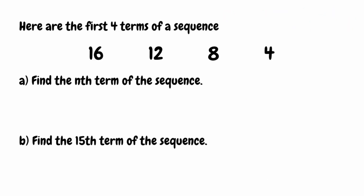For this final question, we're given that the first four terms of a sequence are 16, 12, 8, and 4. For the first part we want to find the nth term. I'll start by labelling the four terms: term number 1, term number 2, term number 3, and term number 4.